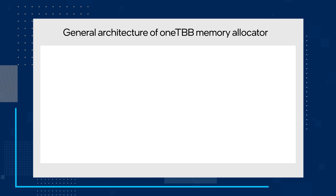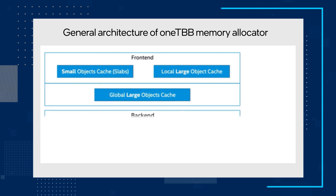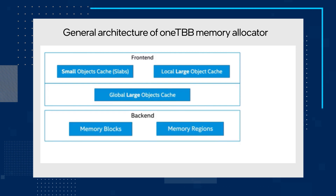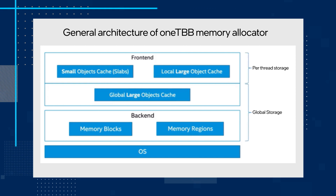OneTBB Memory Allocator consists of two distinct layers. The front end acts as a caching layer holding objects inside two storage types, and the back end reduces the number of expensive calls to the OS, serving the needs of the front end while simultaneously avoiding significant fragmentation. The article goes into much more detail about this, so I suggest reading it to really dig into what OneTBB brings to the table. Remember, you can get OneTBB as part of the Intel OneAPI-based Toolkit, or you can download the standalone version of the library.